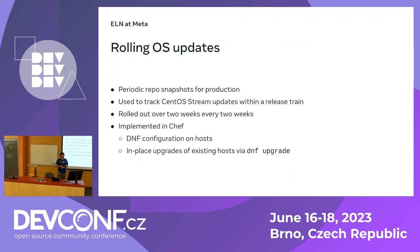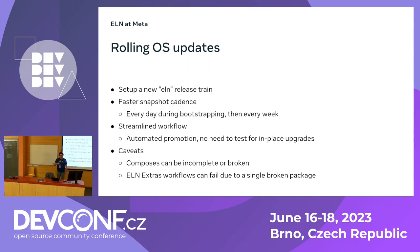Once we have the repos, we have to hook them up into our deployment pipeline. For CentOS Stream, we snapshot the production repos every two weeks and roll them out on the fleet across two weeks via Chef — Chef updates the dnf.conf on the machine and runs dnf upgrade. In the case of ELN, we just made a release train called ELN that gets continuously updated. We snapshot it every day initially (for quick iteration) and later every week. We don't really care about in-place updates for ELN — what we really care about testing is the initial provisioning bring-up. So we automatically promote all snapshots. The only caveat is that ELN composes can be broken, since we publish all composes regardless of state, so we need to filter for only composes tagged as finished.